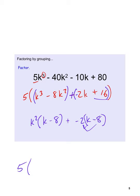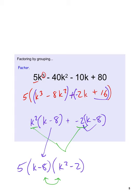Combining gives 5 times k minus 8 times k squared minus 2. It doesn't matter which order we write the parentheses. And k squared minus 2 cannot be simplified further — we aren't subtracting a perfect square — so that's the final answer.